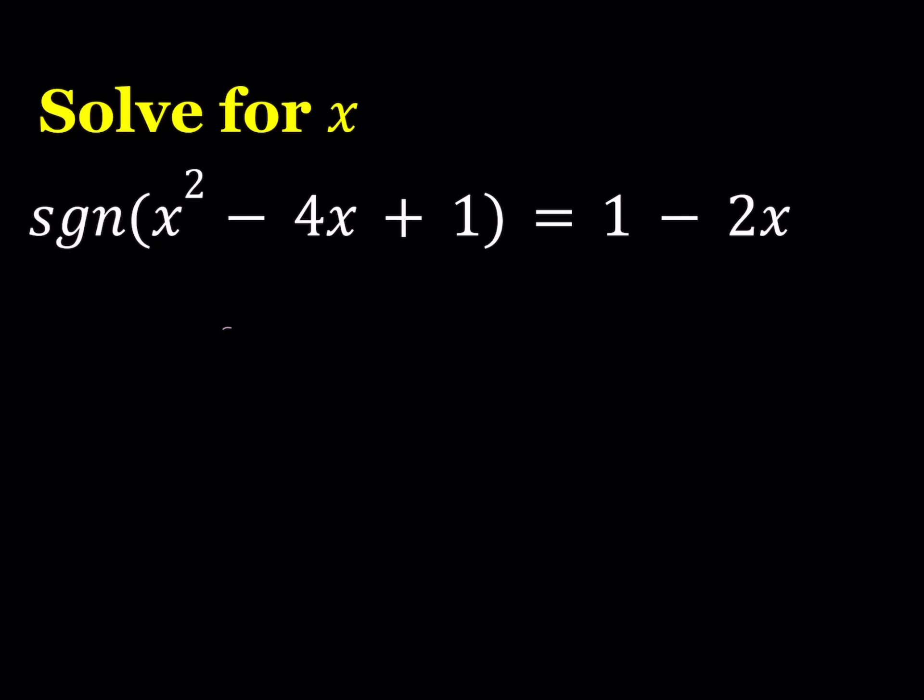So a signum, or sign function, is basically, and not to be confused with the trigonometric sine, which is S-I-N or S-I-N-E, the sign function is defined as follows. If you have the sign of A, it is defined as the following. If A is positive, it's equal to 1. If A is negative, then the sign of A, or signum of A, is equal to negative 1. And if A is equal to 0, then the signum of A is equal to 0.